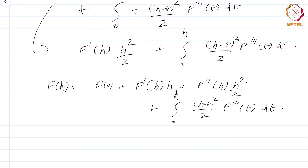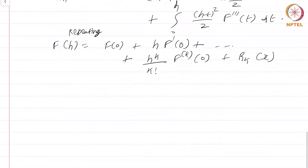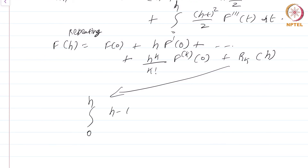Repeating this argument, we obtain the general formula: f(h) = f(0) + h·f'(0) + ··· + (h^k / k!)·f^(k)(0) + R_k(h), where the remainder is R_k(h) = integral from 0 to h of (h − t)^k / k! · f^(k+1)(t) dt. We have derived a different form of the remainder by repeatedly applying integration by parts — essentially repeated application of the fundamental theorem of calculus.